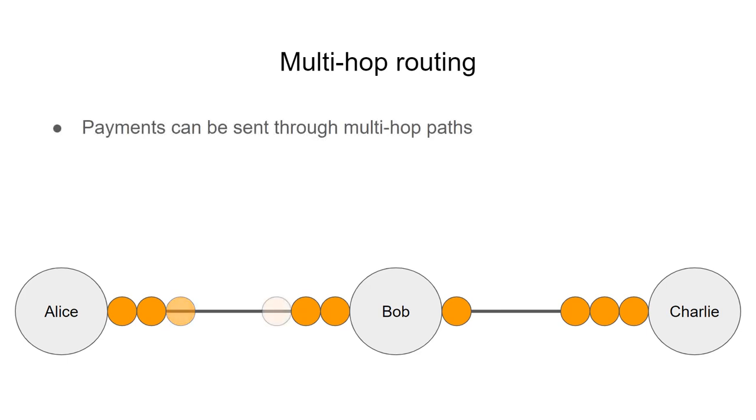Here's how it works. Alice forwards a coin to Bob. Bob forwards a coin to Charlie. Then Charlie uses the payment secret to redeem the coin from Bob, and Bob can use the same secret to atomically redeem the coin from Alice. So one coin has effectively moved from Alice through Bob to Charlie.